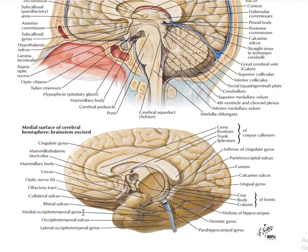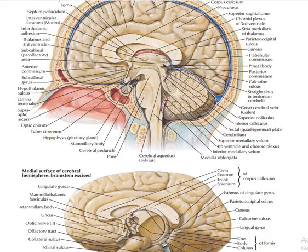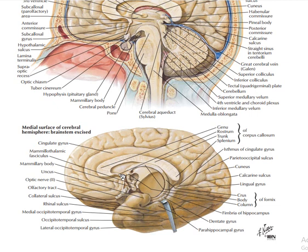There are different gyri at the level of the temporal region. From the external anatomy we have the lateral occipitotemporal gyrus, the parahippocampal gyrus, the dentate gyrus, and the fimbria of the hippocampus. The next structure to note is the corpus callosum. The corpus callosum consists of different parts. The anterior inferior part is called the rostrum.